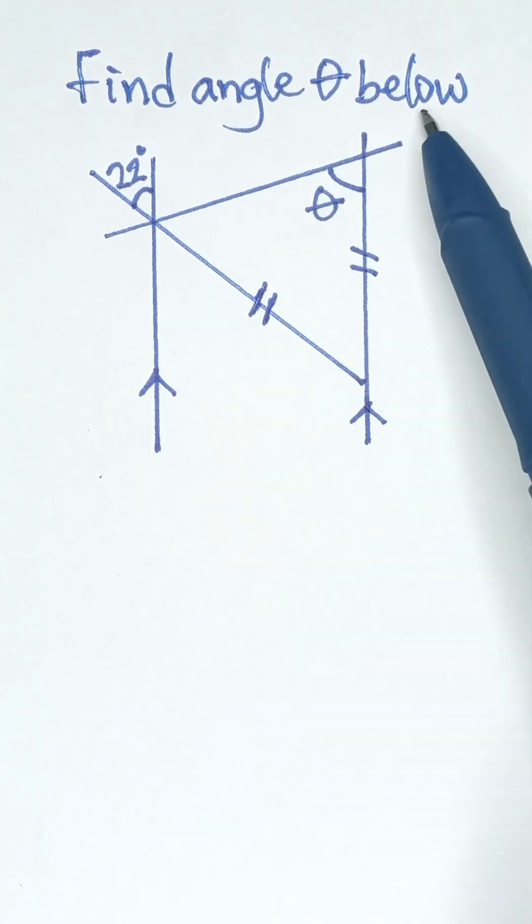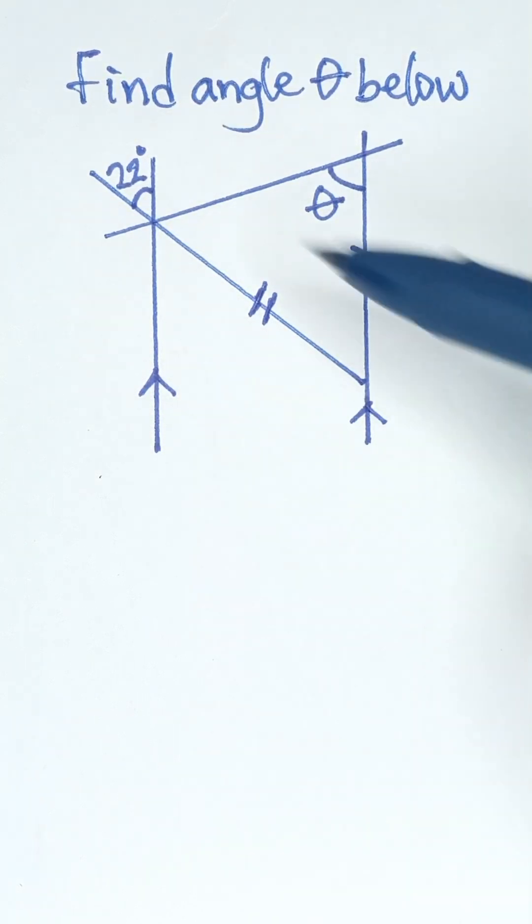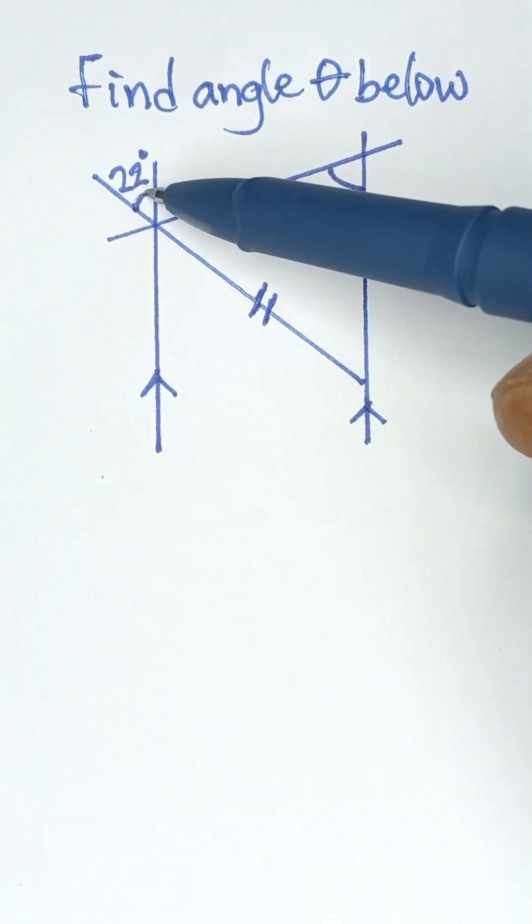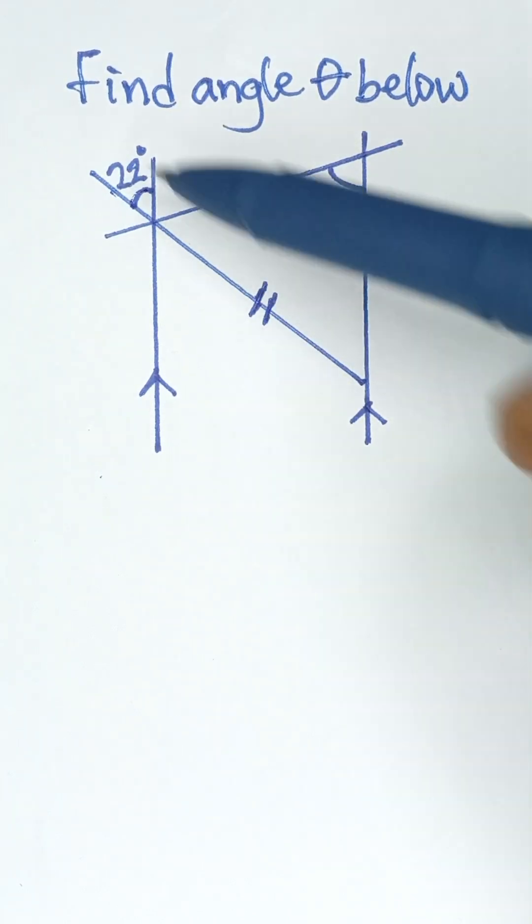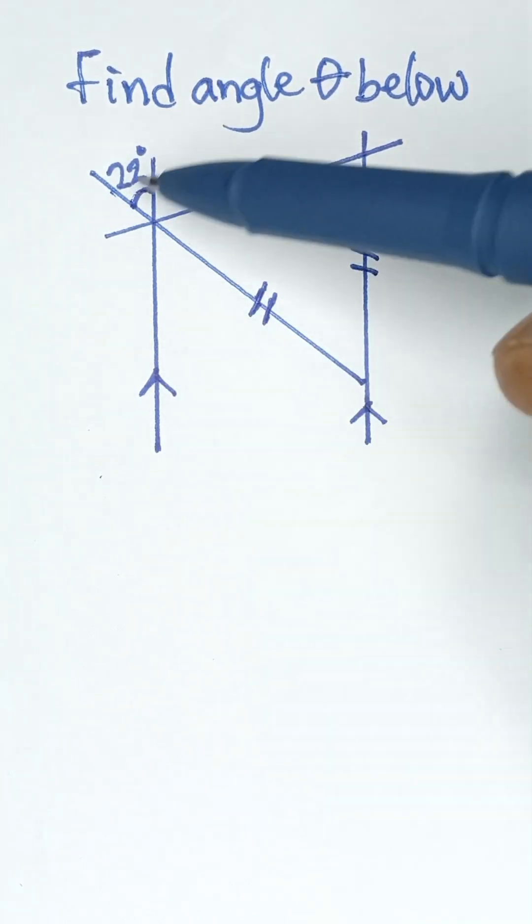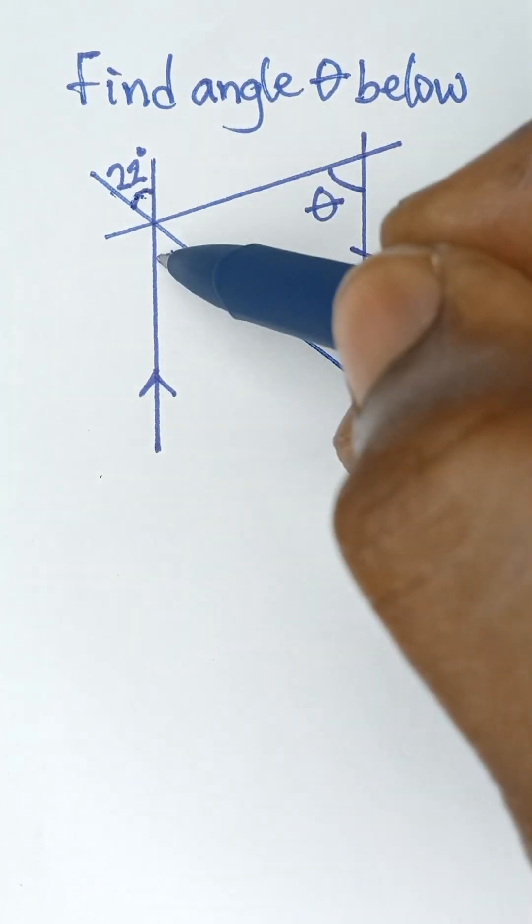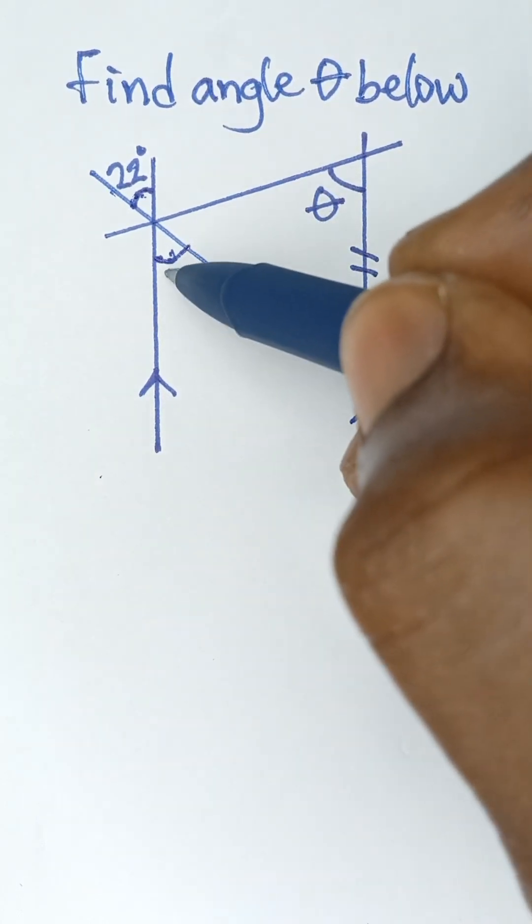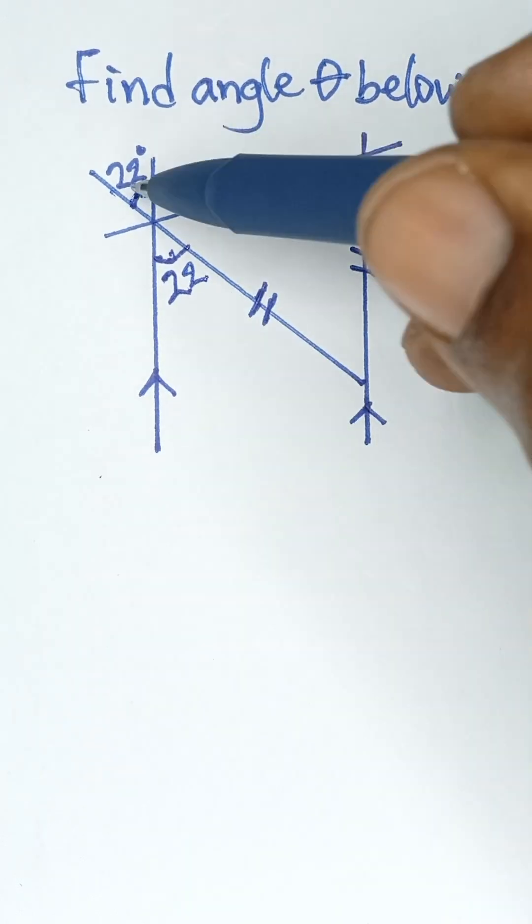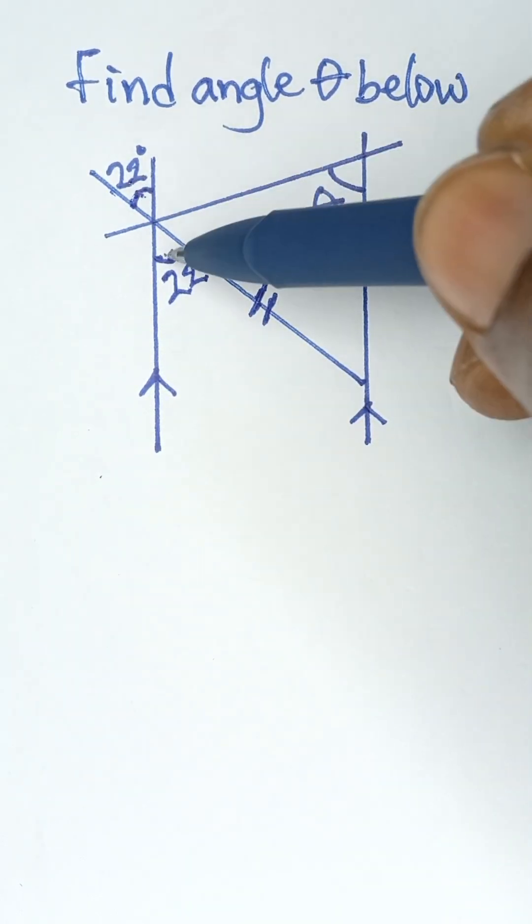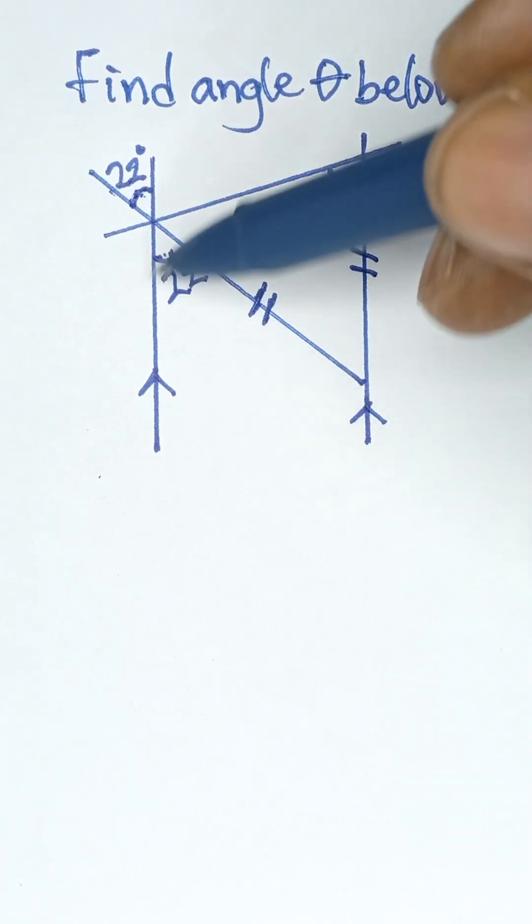Find angle theta below. Now if you look at this diagram, this is 22, this is a straight line, and this is also a straight line. So these two angles are facing each other, so we say they are vertically opposite angles, and that means they are equal. Vertically opposite angles are equal.